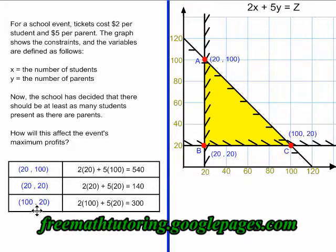And I plug all three of those vertices into this optimization function. I get these answers: 540, 140, and 300.